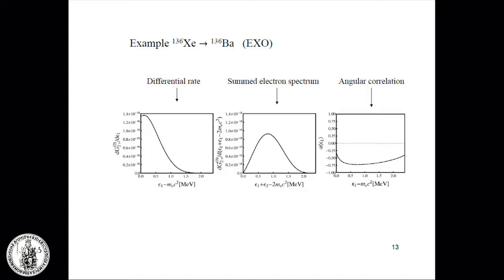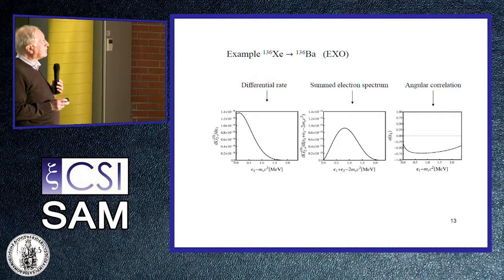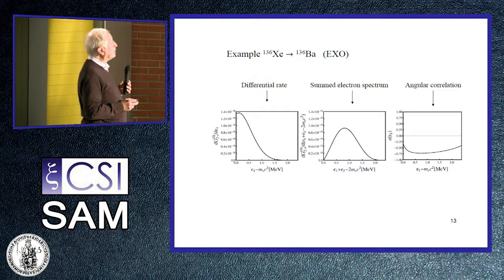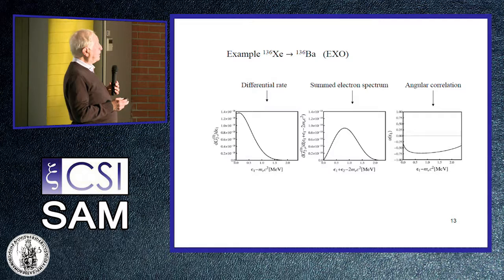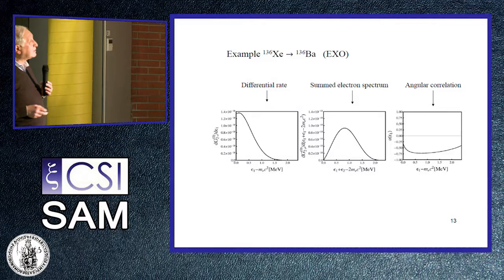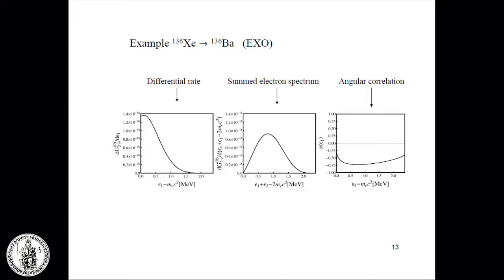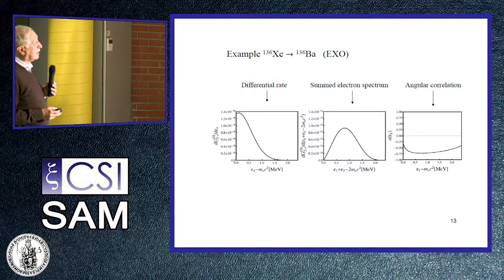Here is an example: the EXO experiment in the United States, led by Giorgio Gratta, originally Italian and now a professor at Stanford. EXO is done in a mine underground and uses Xenon-136. The decay is from Xe-136 to Ba-136. Here is the differential rate, the sum electron spectrum — which they measure directly — and the angular correlations. The two electrons are preferably emitted either at angle zero or at angle pi, though they are somewhat isotropically emitted.